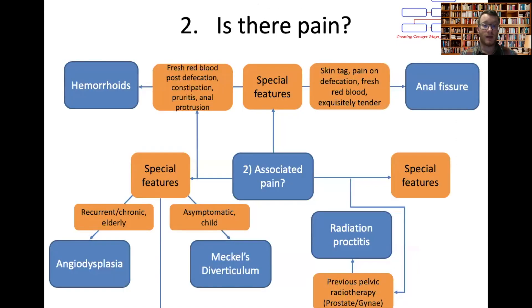Is there pain? If there isn't pain, we move to special features. Usually angiodysplasia or AV malformations — chronic or recurrent bleeds in generally elderly patients. If it's an asymptomatic child with no pain, it's potentially a Meckel's diverticulum.